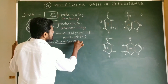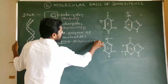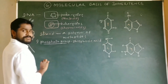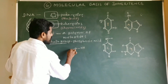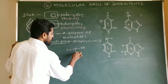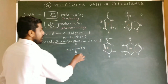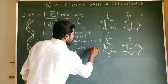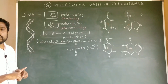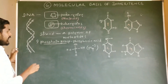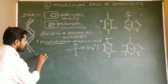The phosphate group is generally represented by phosphoric acid. This is the structure of phosphoric acid, which is designated with the symbol PO4³⁻. This is one of the components of a nucleotide. The second component is pentose sugars.